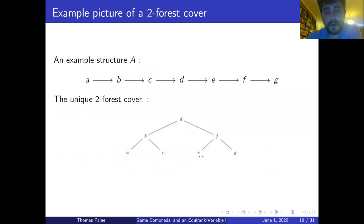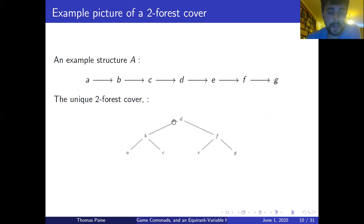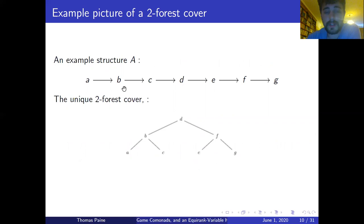Here is an example. Structure A is given a two-forest cover. Element D is on the same branch as everything. B is on the same branches as C and A. B and F are on different branches, but there is no relation between B and F — relations only hold between elements connected by arrows in the structure.